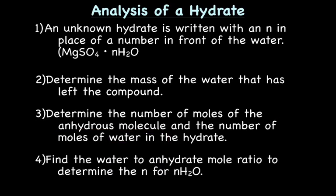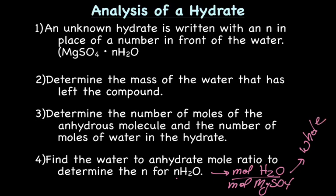And then we find the water to anhydrite mole ratio to determine the N for H2O. So what do I mean by that? Well, in our example we've been doing, it would be the moles of water that we figured out in step three divided by the moles of MgSO4 that we also figured out in step three. That needs to be a whole number or close to a whole number. And that number will be our N. So that's how you do an analysis of a hydrate.